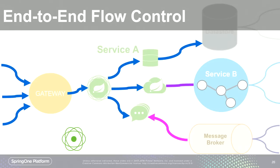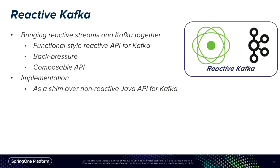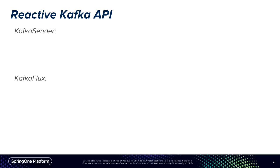When building microservices and wanting end-to-end flow control, Reactive helps implement non-blocking flow control end-to-end. Reactive Kafka aims to bring the power of reactive streams into Kafka. It is a functional-style reactive API with non-blocking back pressure for building pipelines. It's a composable, side-effect-free API. As an implementation, it's a thin shim over the non-reactive Java API — which is why we examined the Java API in detail.